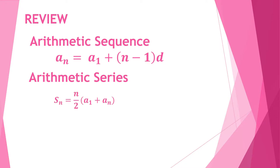Next is the formula for the arithmetic series, which is the sum of the terms of an arithmetic sequence. We can have s sub n is equal to n over 2 times a sub 1 plus a sub n, applicable if you are given the first term and the last term. We can also use s sub n is equal to n over 2 times 2 a sub 1 plus n minus 1 times d, which you can use if you know the number of terms you're going to add.